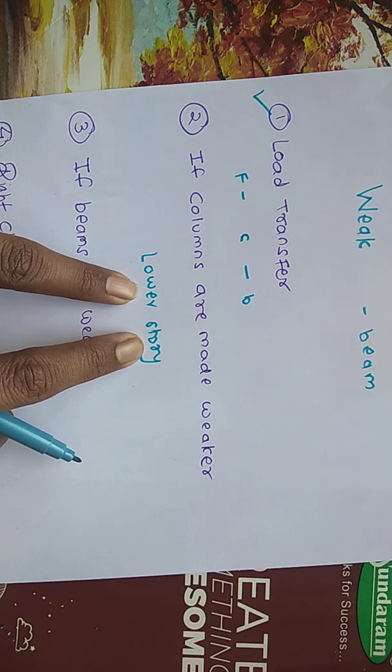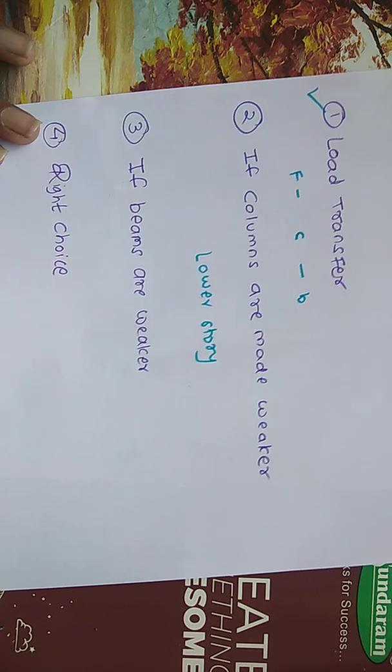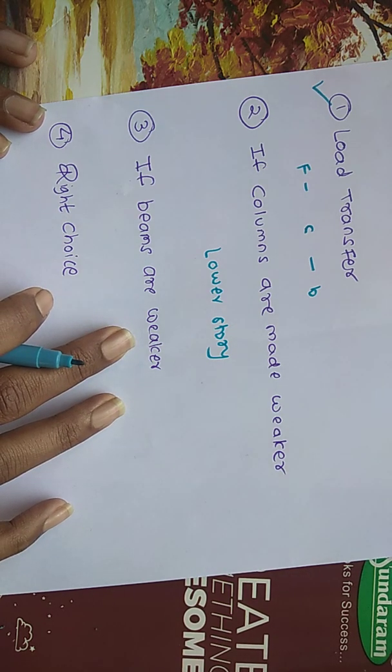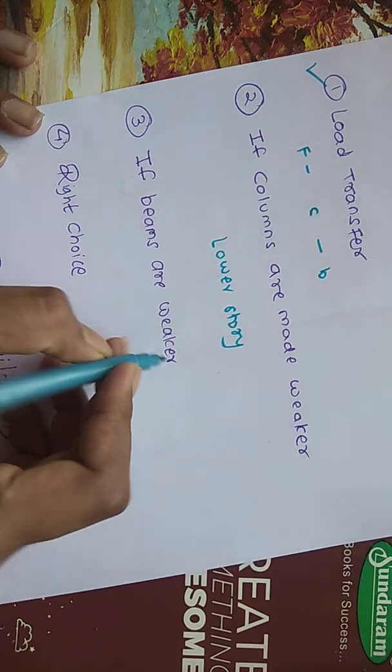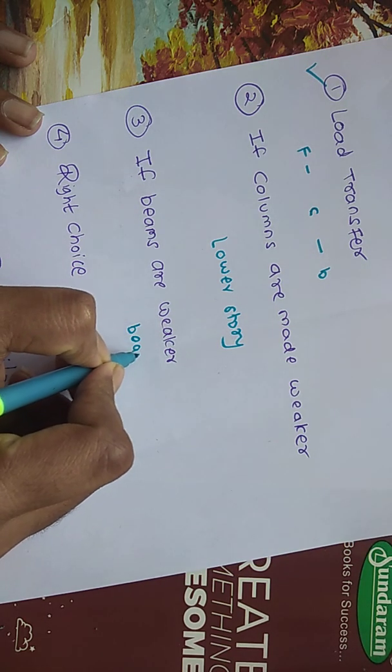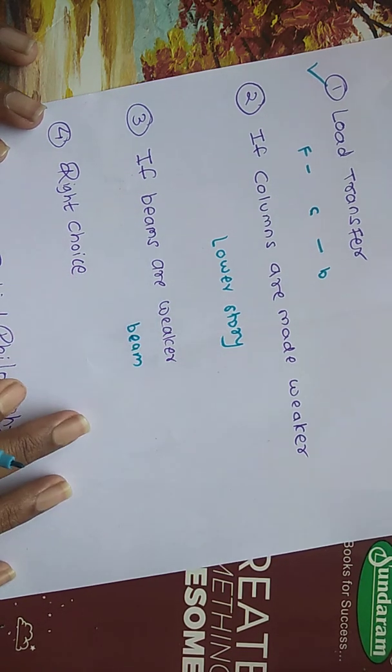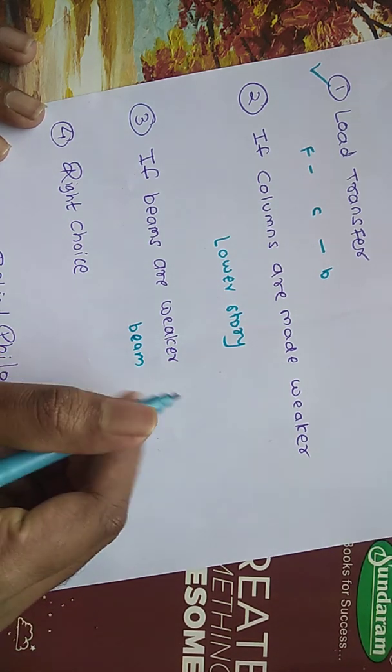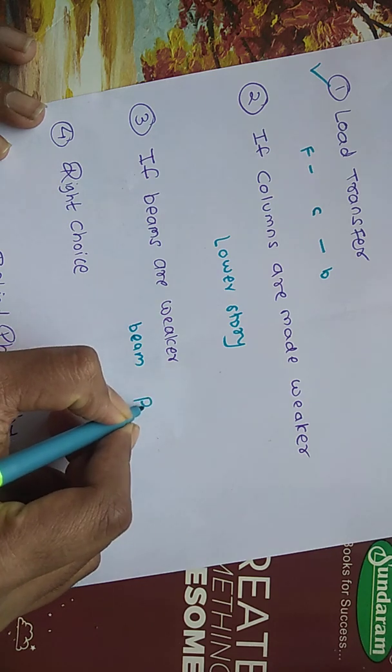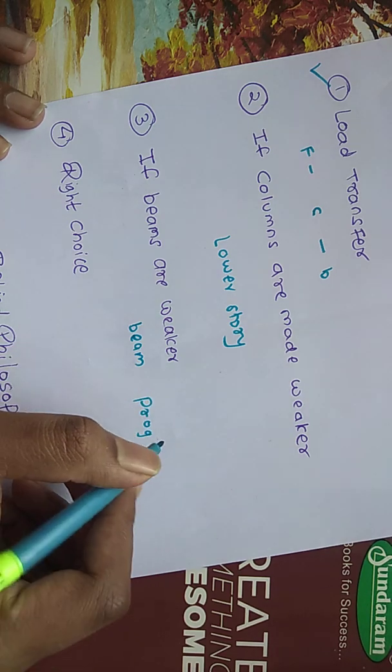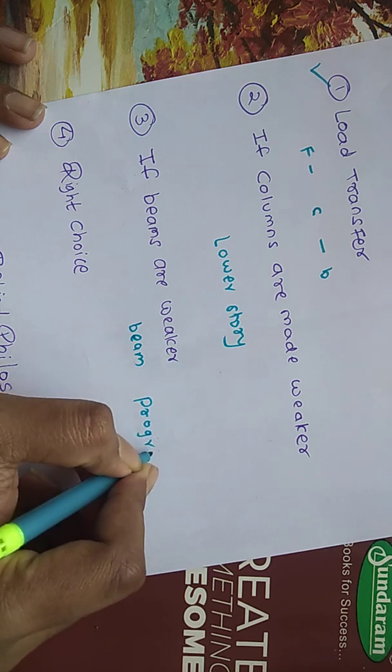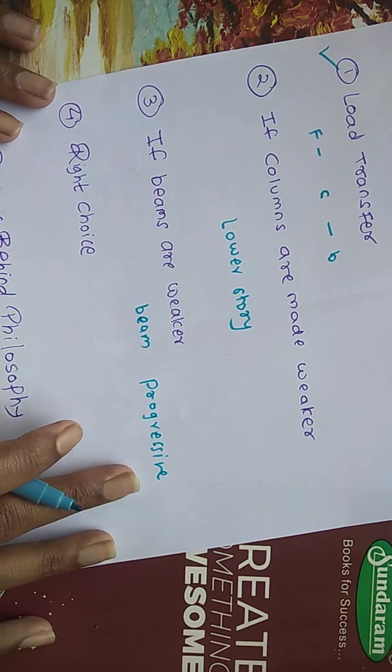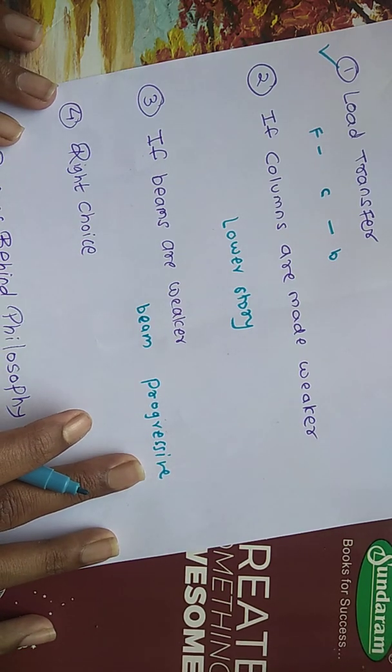Because of the columns at the lower story getting damaged, the entire building may collapse. Now let's see what if the beams are weaker. If the beams are weaker and columns are stronger, then damage will first occur at the beam. But if the beam is ductile enough, then there will be progressive damage.